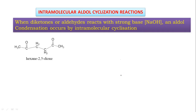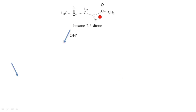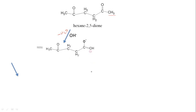Let us take the reactant hexane-2,5-dione. This reacts with a strong base. What will be the product? A proton can be removed from the CH3 group — one proton is removed by the hydroxide group, giving minus H2O, and a carbanion is formed.